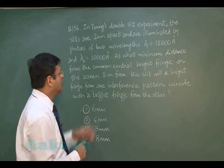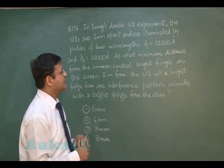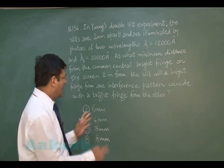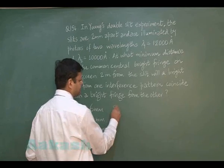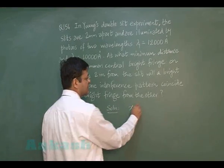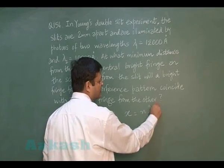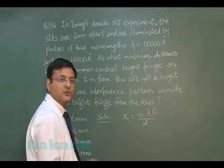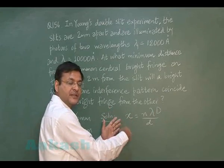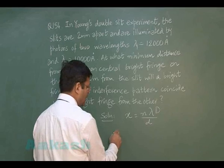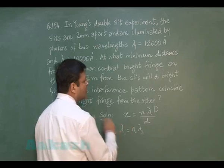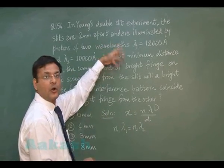The 2 meter value is capital D. To solve this, use the position of the nth bright fringe: x = n·lambda·D / d. Since the position of bright fringes for both frequencies is the same, we use the expression n1·lambda1 = n2·lambda2 to find the order of the fringe.